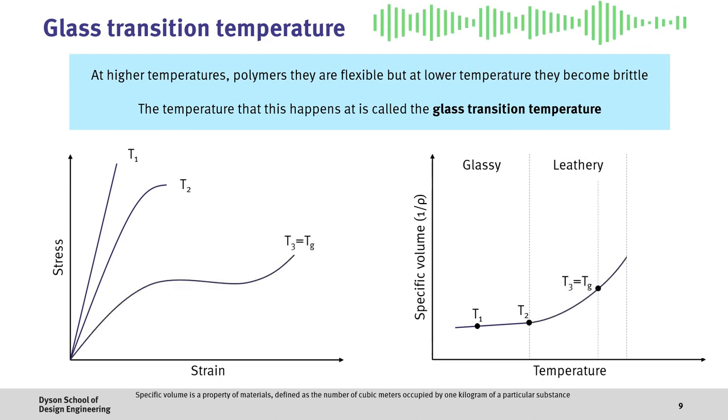Then, as we heat the material further, we reach the glass transition temperature, where the material becomes even softer. Here, the heat causes the polymer chains to become further separated from each other, weakening the van der Waals forces further.